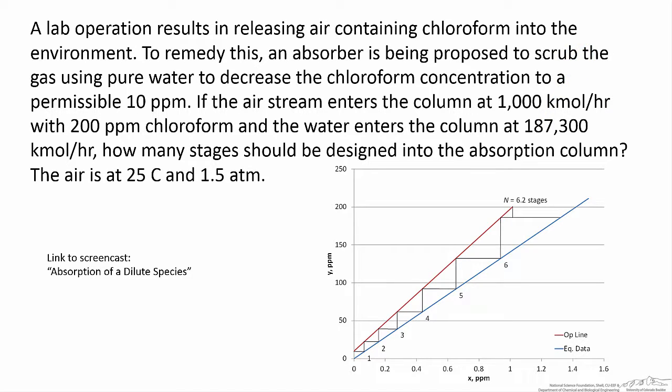The Kremser analysis is a non-graphical method used to determine the number of stages required in an absorption system. It can also be applied to any other system where you have multiple stages you're stepping off, where both the equilibrium line and the operating line are linear.